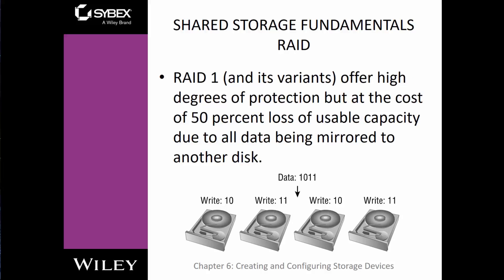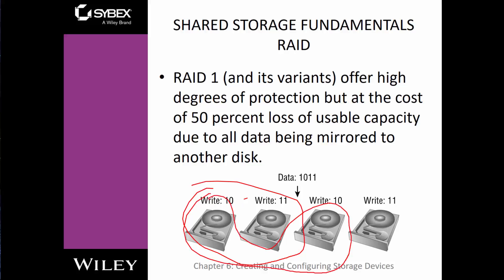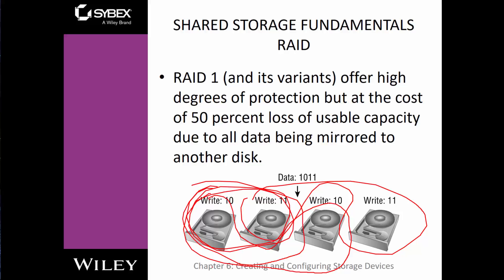RAID 1, using two disks, writes 100% — a full copy — to each disk. What you copy to one is automatically copied to the other. You can combine RAID 1 and RAID 0 together, so whatever is written to one set of disks writes to the other set, giving you both performance and redundancy.